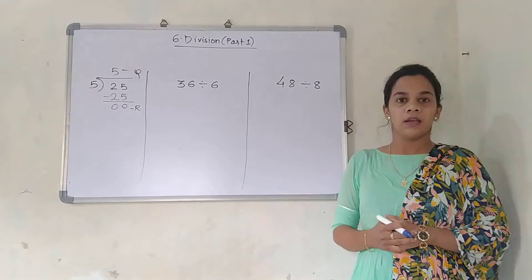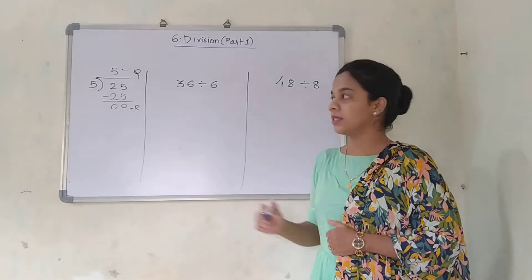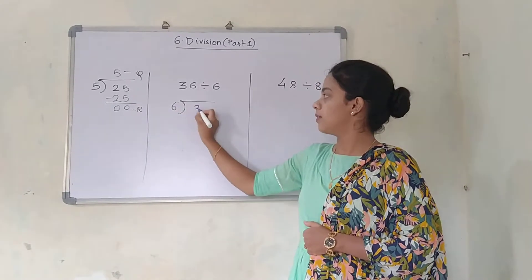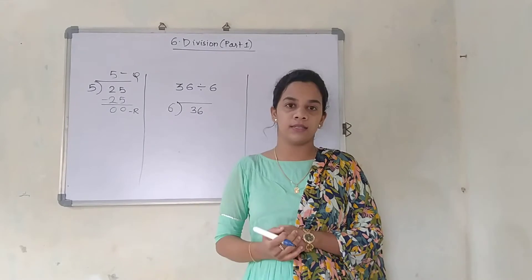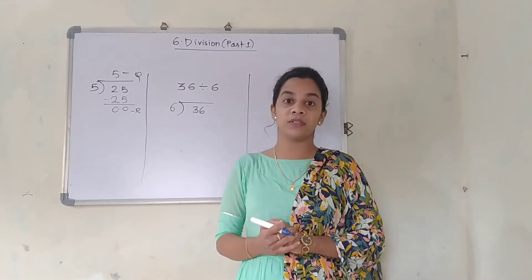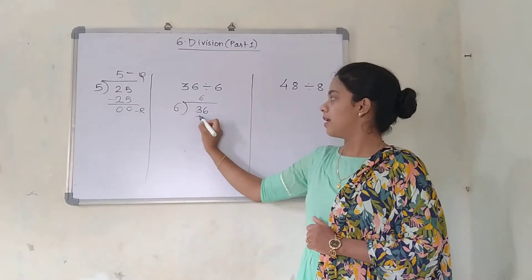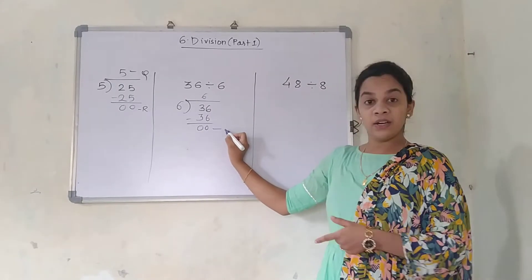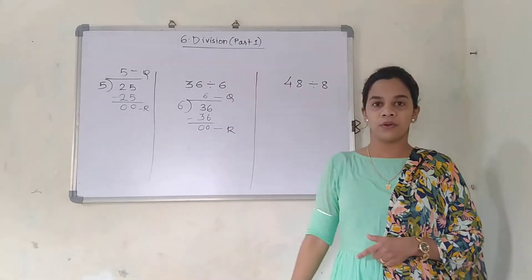36 divided by 6. 36 is the dividend and 6 is the divisor. I am going to write 6 here and 36 here. Now just say the 6 times table till you get 36: 6 ones are 6, 6 twos are 12, 6 threes are 18, 6 fours are 24, 6 fives are 30, 6 sixes are 36. So 6 sixes are 36. The remainder will be 0 and 6 is the quotient.